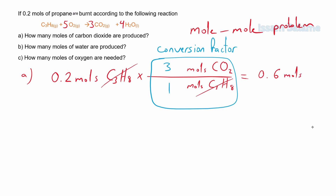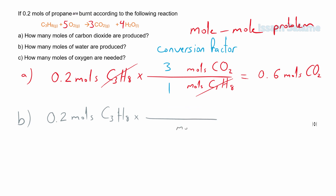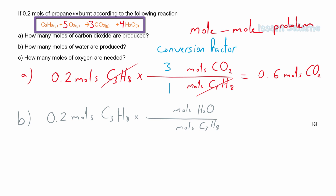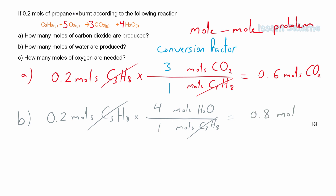For part B, we start with the given: 0.2 moles of propane. We multiply by the fraction — moles of propane in the denominator, moles of water in the numerator. We get the coefficients from the balanced chemical equation: 4 next to water and 1 next to propane. We cancel the matching units and the answer is 0.8 moles of water.